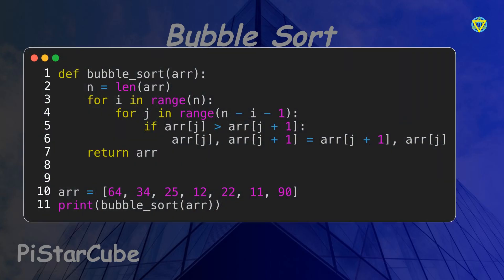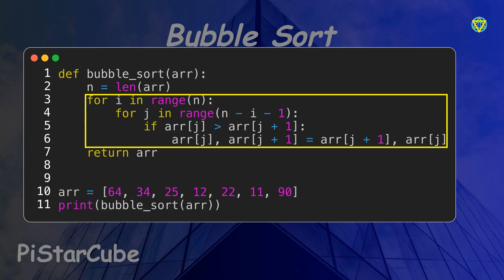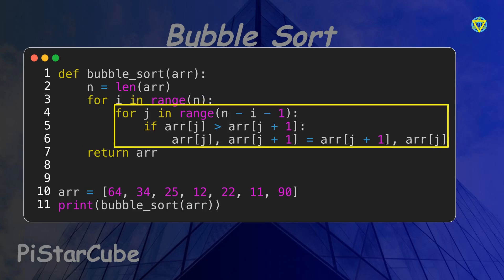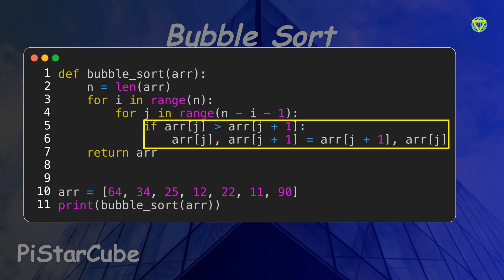Now let's take a quick look at the actual code for bubble sort. We start by getting the length of the array and storing it in n. Then we run a loop i from 0 to n. Inside that, there is another loop j that goes up to the last unsorted element — this shrinking range is important because after each pass the biggest elements are already sorted at the end. Inside the inner loop, we check if the current element is greater than the next one; if it is, we swap them.